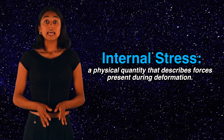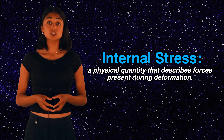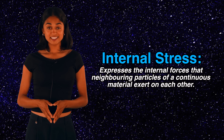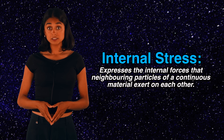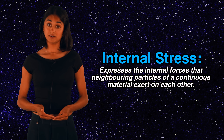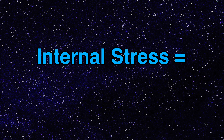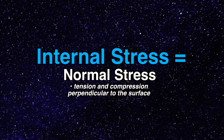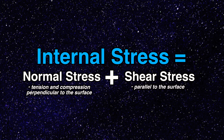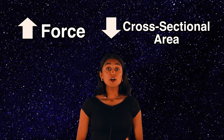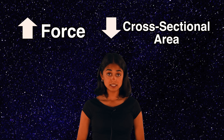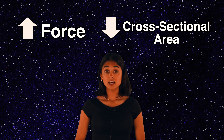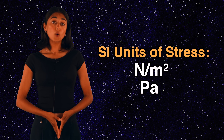So basically, internal stress is a physical quantity that describes forces present during deformation. It expresses the internal forces that neighboring particles of a continuous material exert on each other. The internal stress is the sum of two components: the normal stress — compression or tension — perpendicular to the surface, and the shear stress that is parallel to the surface. The greater the force and the smaller the cross-sectional area of the body on which it acts, the greater the stress. Stress has dimension of force per area, with SI units of Newtons per square meter, or Pascal.